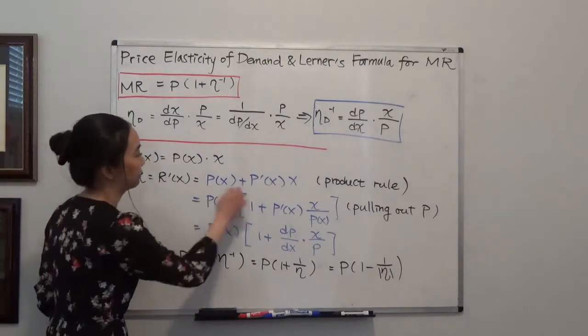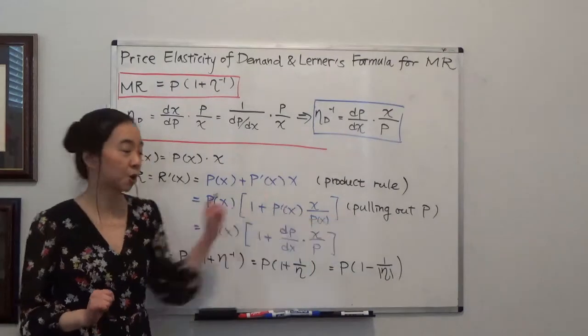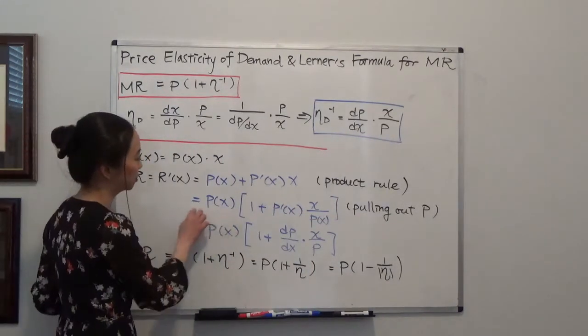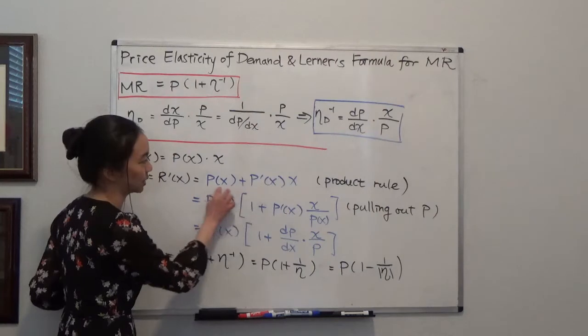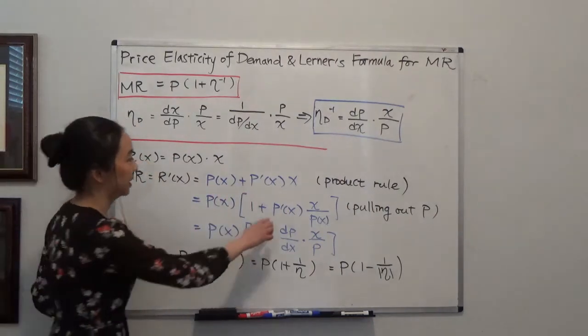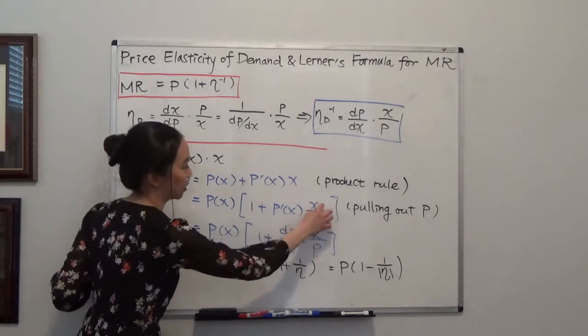And the second, after I find it, I am going to pull out my price P(x). So that will be equal to P(x) times 1. This term is P(x), plus P'(x) times x over P(x).